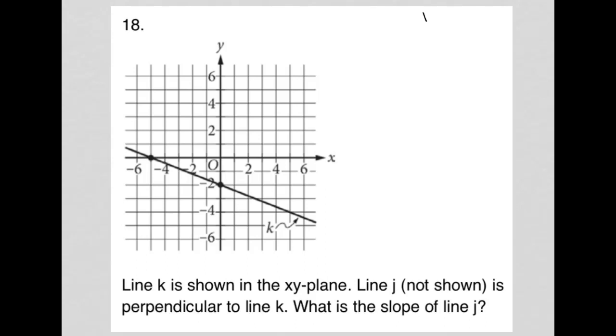So this question is a diagram question. More specifically, this is a graph question. Whenever I have a graph question, I try to pay attention to the intercepts. Looks like I have a y-intercept at negative 2 and an x-intercept at negative 5.